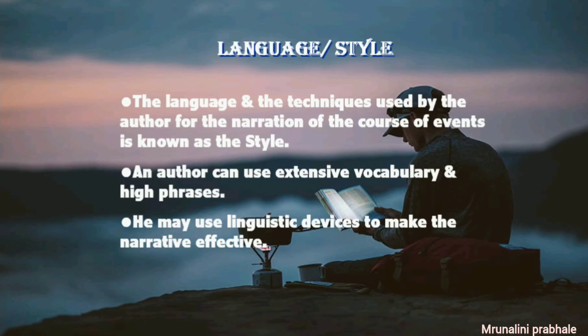The last element of the novel is language or style. The language and techniques used by the author for the narration of the course of events is known as style. An author can use extensive vocabulary and high phrases, or may be laconic and write only to the plot, or may mix both according to the requirement for meeting his purpose. The author may use linguistic devices to make the narrative effective. All these factors decide the texture of the narration and create an impact on the readers.